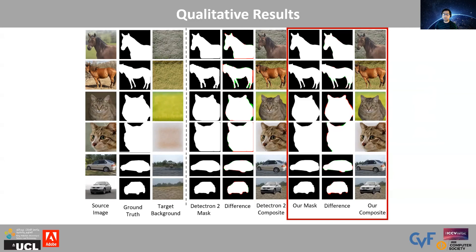Here we show some qualitative results on horses, cats, and cars. Again, the results in the red box show our segmentation results. Notice the blending properties of our composite compared to the supervised Detectron2-based method.